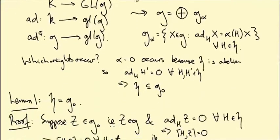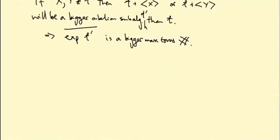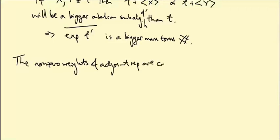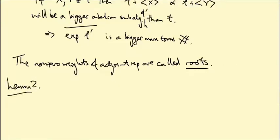So we're asking which weights occur. Zero occurs. Any other weight that occurs in the adjoint representation is called a root. The nonzero weights of the adjoint representation are called roots, and the weight diagram is called the root diagram. We'll write R for the set of roots.